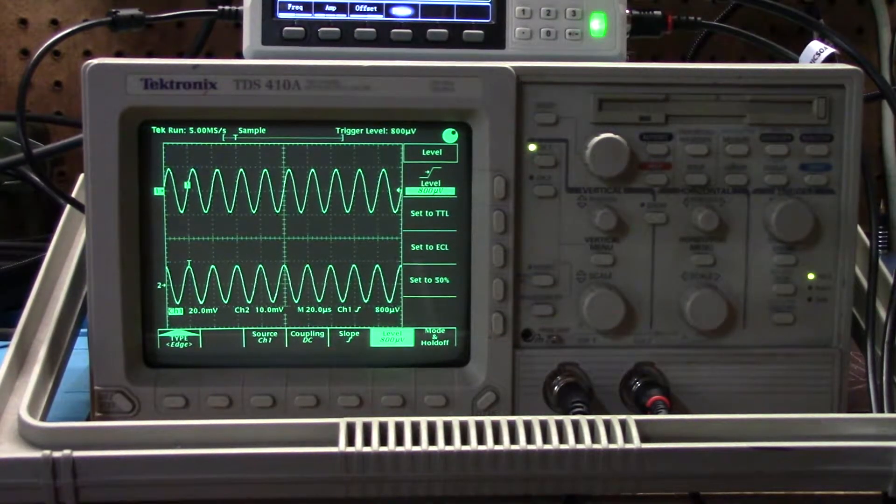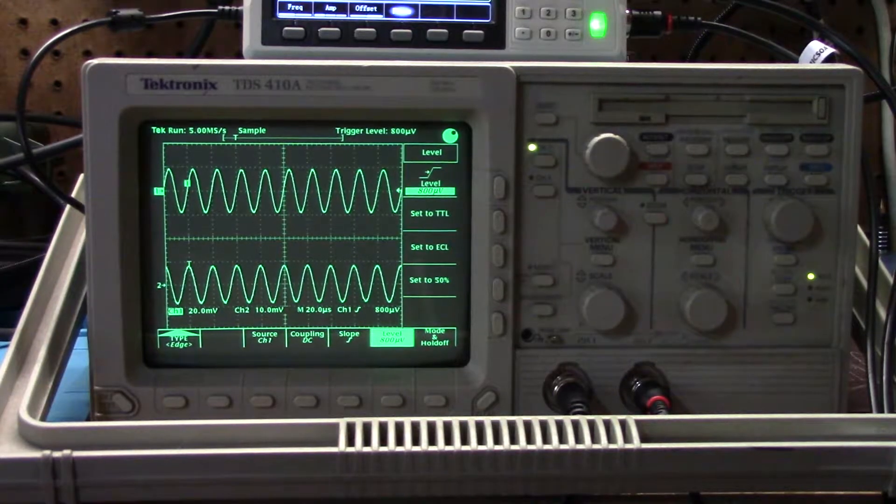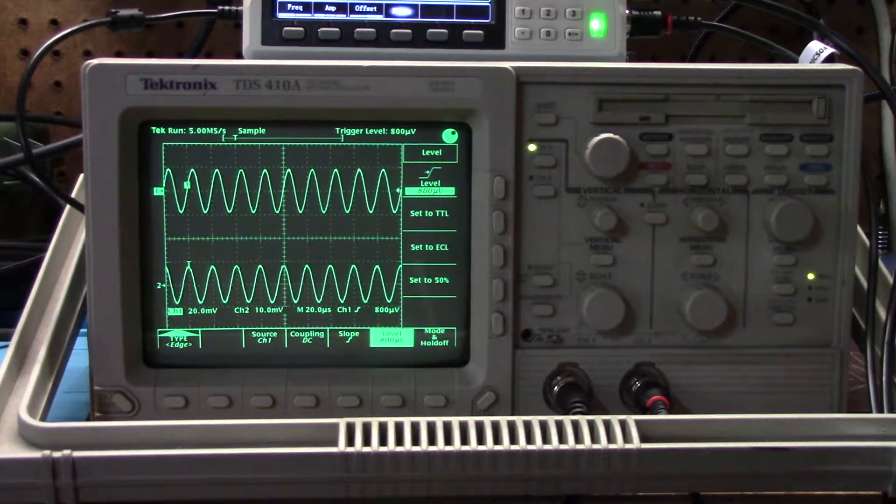Alright guys this is what I was telling you about. I have a Tektronix TDS-410A oscilloscope. I got this used from instock901.com. I'll put a link to their site below. There are scopes on eBay and any number of used test equipment sites. I just found a good deal on this one.